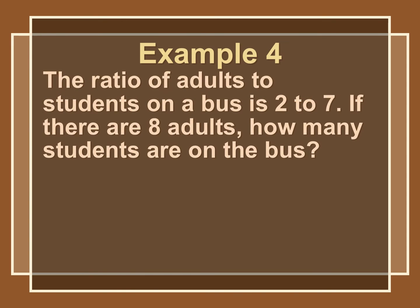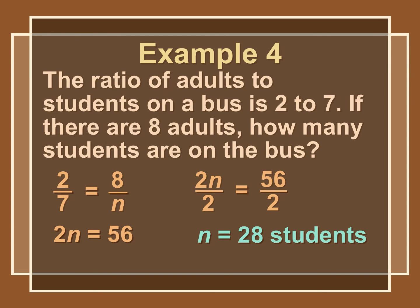The property of proportion is useful in word problems. Say we have a bus with adults and students, and the ratio of adults to students is 2 to 7 — for every 2 adults, there are 7 students. If there are 8 adults, how many students are on the bus? Setting up the proportion 2 over 7 equals 8 over n, we cross-multiply to get 2n equals 56, so n equals 28. There are 28 students if there are 8 adults.